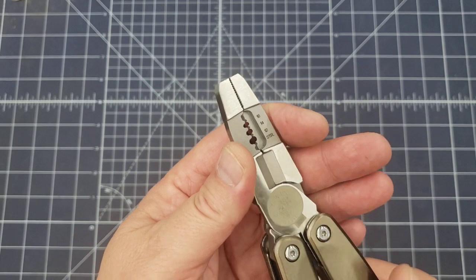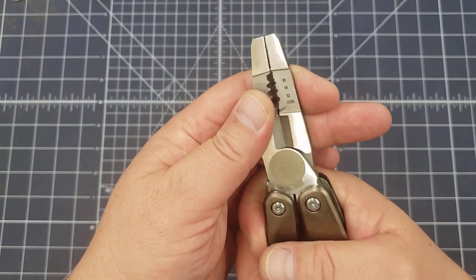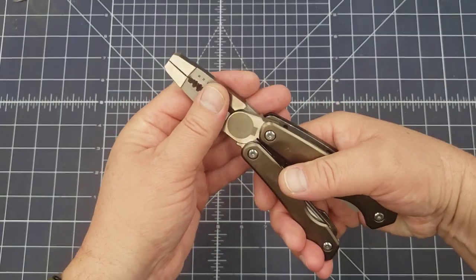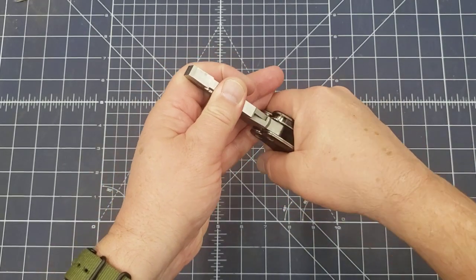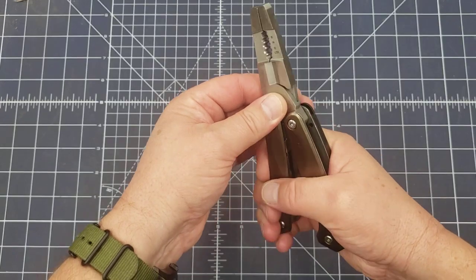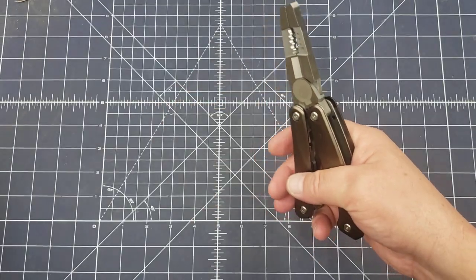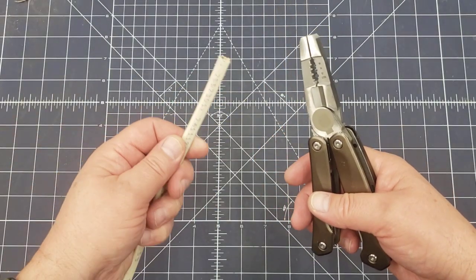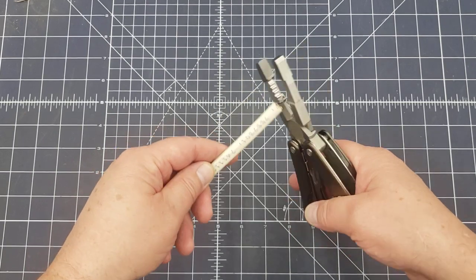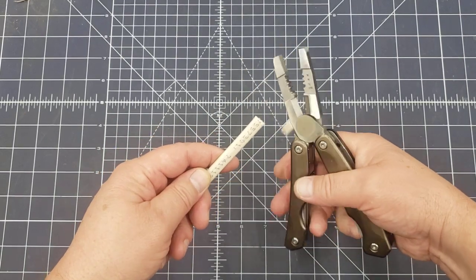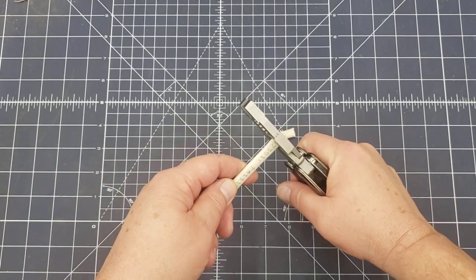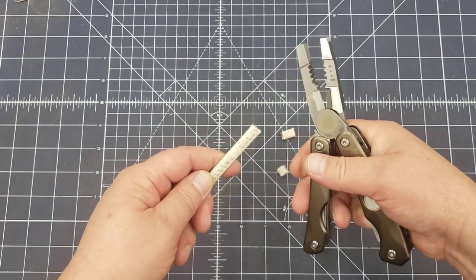So it has that somewhat ergonomic handle, though. It will dig into your hand a little bit when using it. There's not a whole lot of leverage here when you're cutting wire. So this is just standard 14-gauge Romex. And you really got to put some effort into it. And it will cut, but you got to put basically a lot of oomph in it.